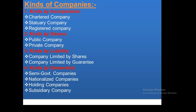Kinds of companies by incorporation: Chartered Companies are those formed by a royal charter. The Bank of England is a Statutory Company. Chartered companies are not limited in the same way as registered companies. Statutory companies are those formed by a special act of parliament.